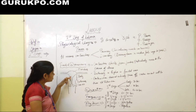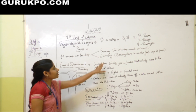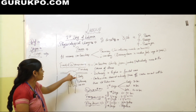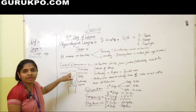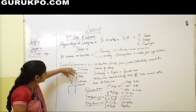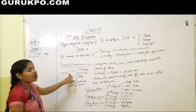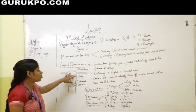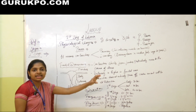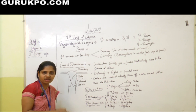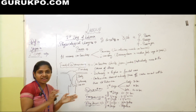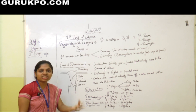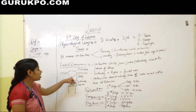The uterus has a fundal area, isthmus, and cervix. Uterine contractions start from the fundal area, especially the area of the cornua, and pass over the entire uterus. The intensity of the contraction is higher in the fundal area. After contraction there is relaxation, then again contraction — but the contraction does not entirely pass off; some amount remains, which is known as retraction.